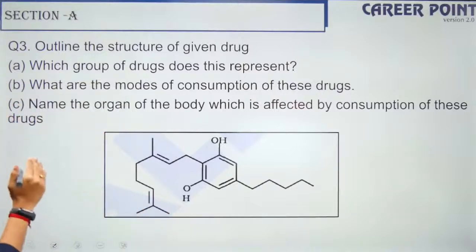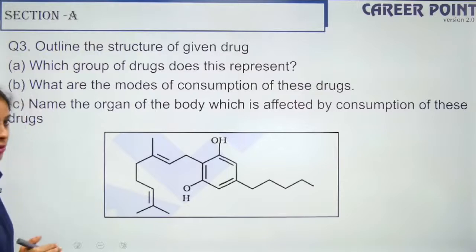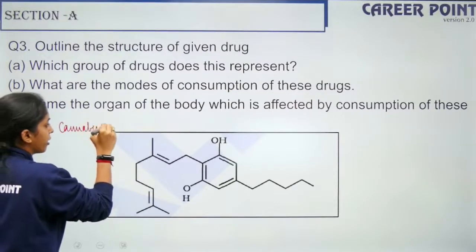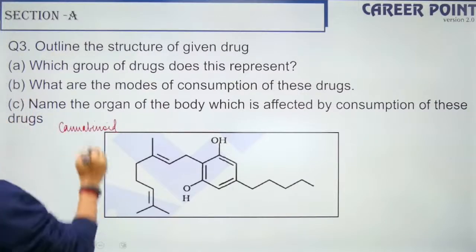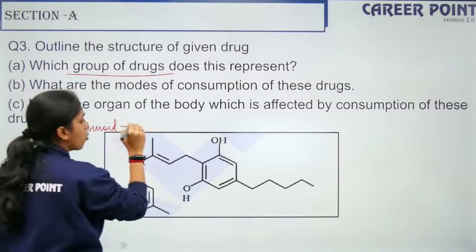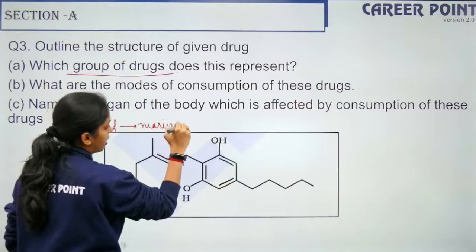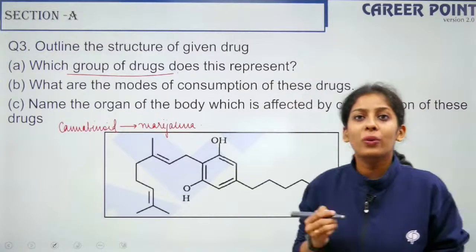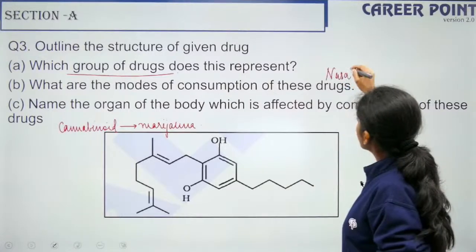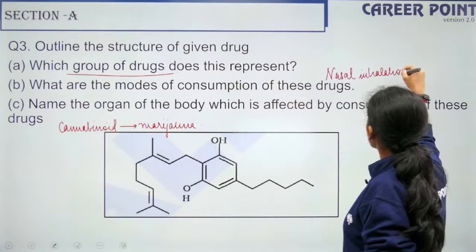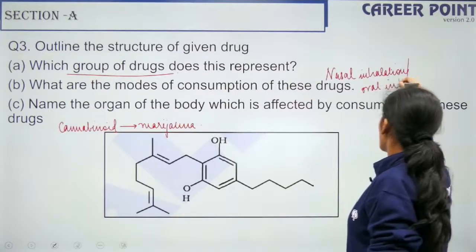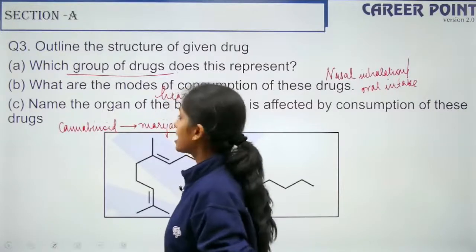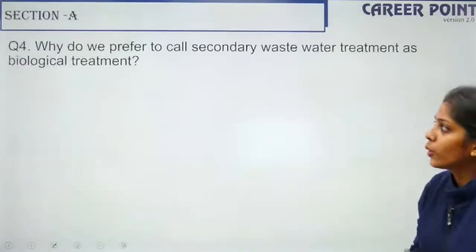Question 3: A drug structure is shown, and you must identify which group it belongs to. It represents a group of drugs called cannabinoids. One example is marijuana. The mode of consumption is nasal inhalation or oral intake. The harmful effects primarily impact the cardiovascular system — the heart is the organ affected.